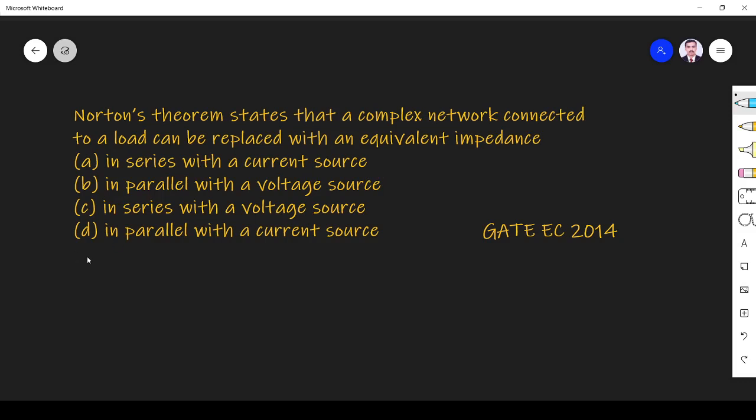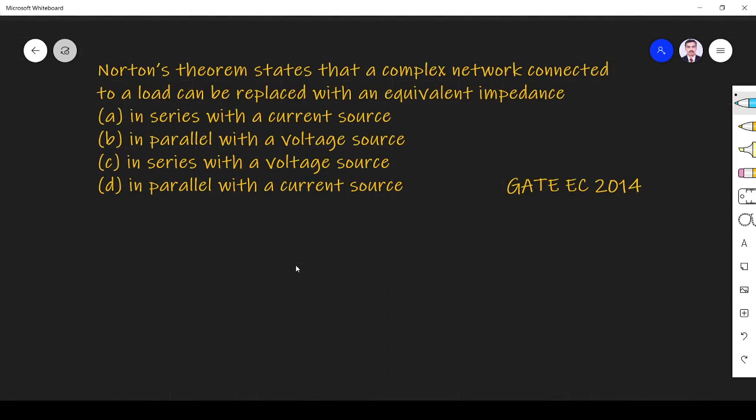or (d) in parallel with the current source. So what they are asking is how a complex network can be replaced—that's what the question is about.